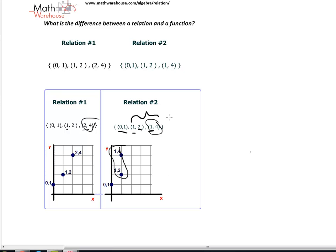This here is not a function, because in a function every x value, in this case 1, must have a unique y value. That's not true here. Here we have an x value of 1 with a y of 4 and a y of 2.